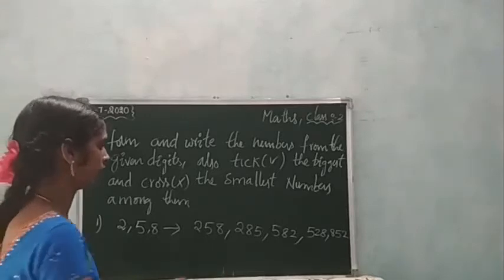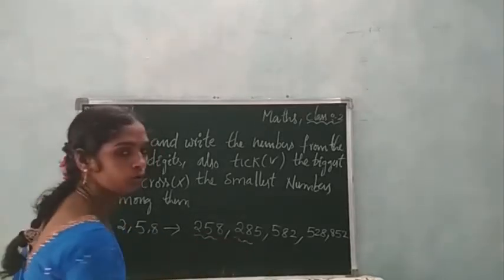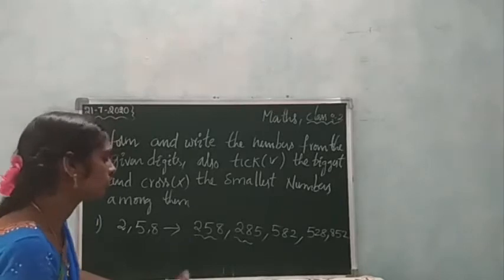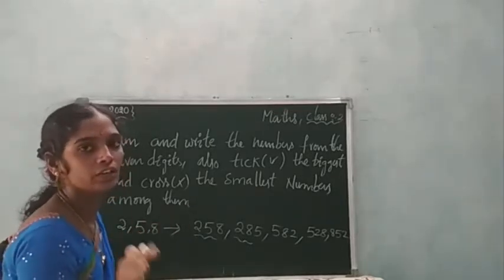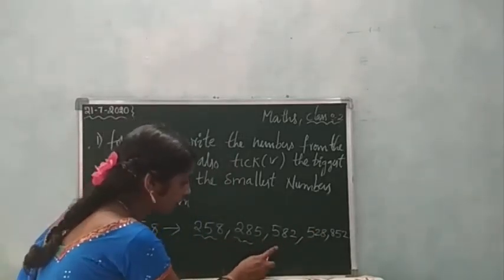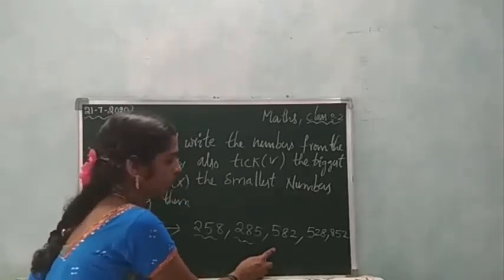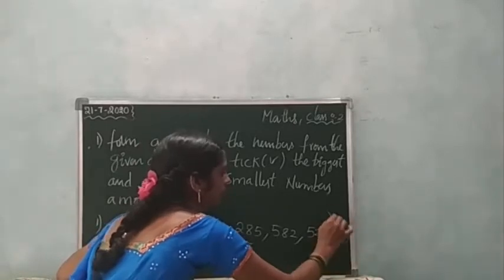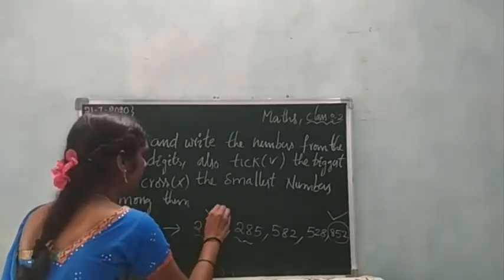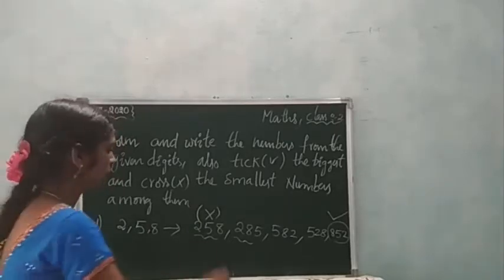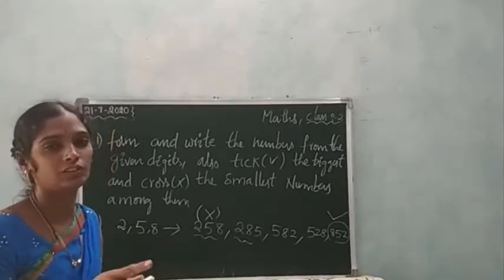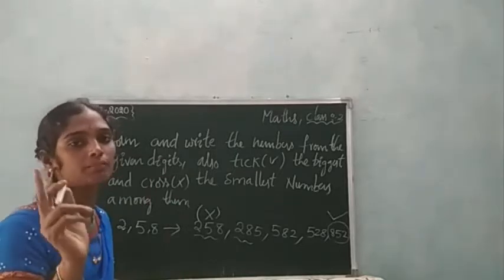After that: 5, 8, 2 and 5, 2, 8. Then 8, 5, 2. I will arrange in this way: 258, 285, 582, 528, and 852. So the highest number — you will tick the mark. 852 is the biggest number, so I can put a tick mark here. The smallest number — 258 — you will cross the mark.